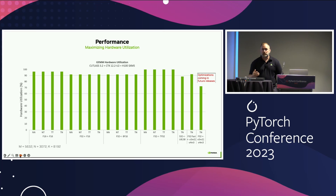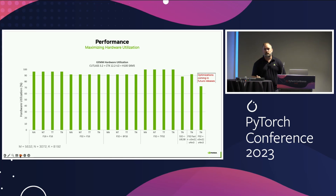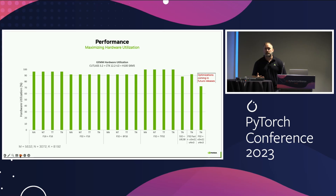The out-of-the-box experience with our off-the-shelf kernels is pretty good at utilizing peak hardware performance. Here's an example using the profiler and the default parameters with the latest version of Cutlass 3.2 and CUDA Toolkit 12.2 on H100. For all these use cases we're roughly at 90% peak utilization. We also try to ensure there are no performance cliffs and will periodically release optimizations as they occur.